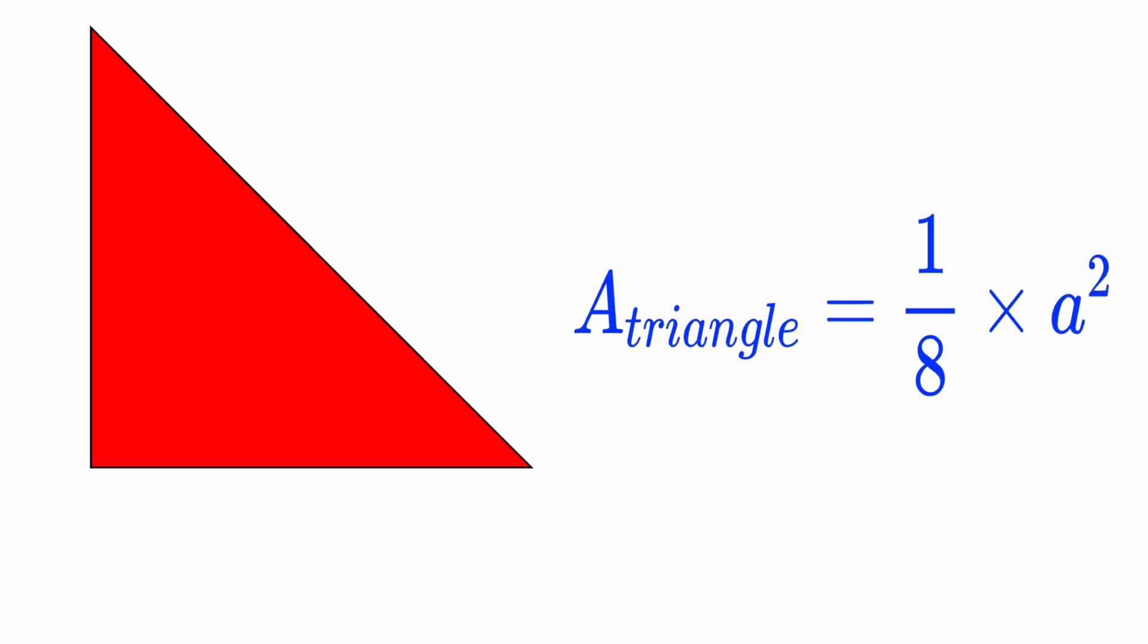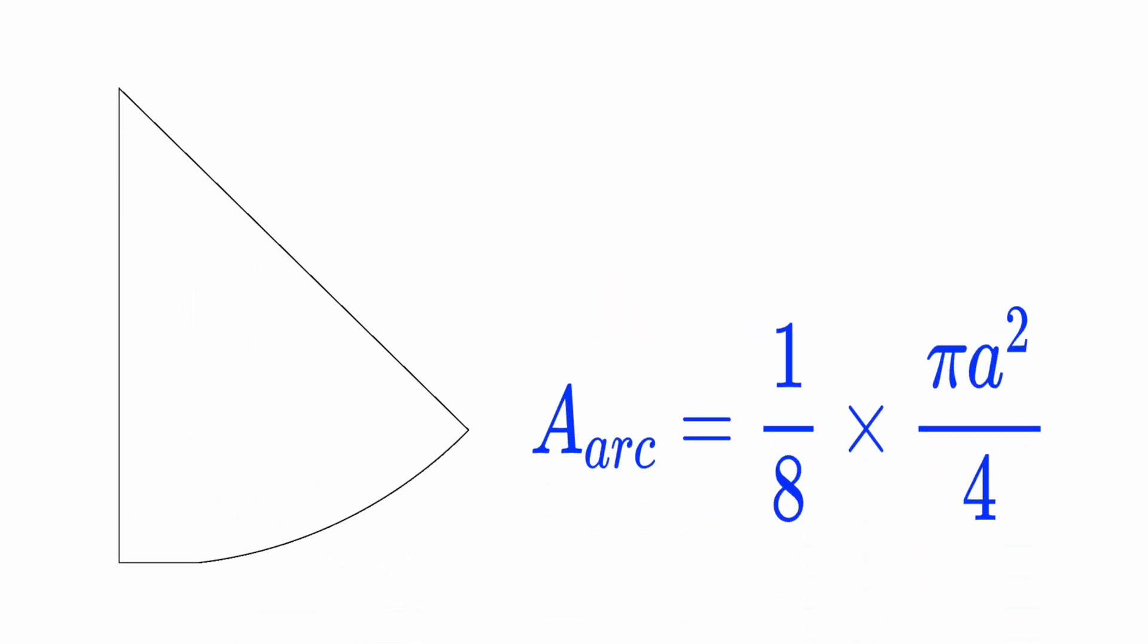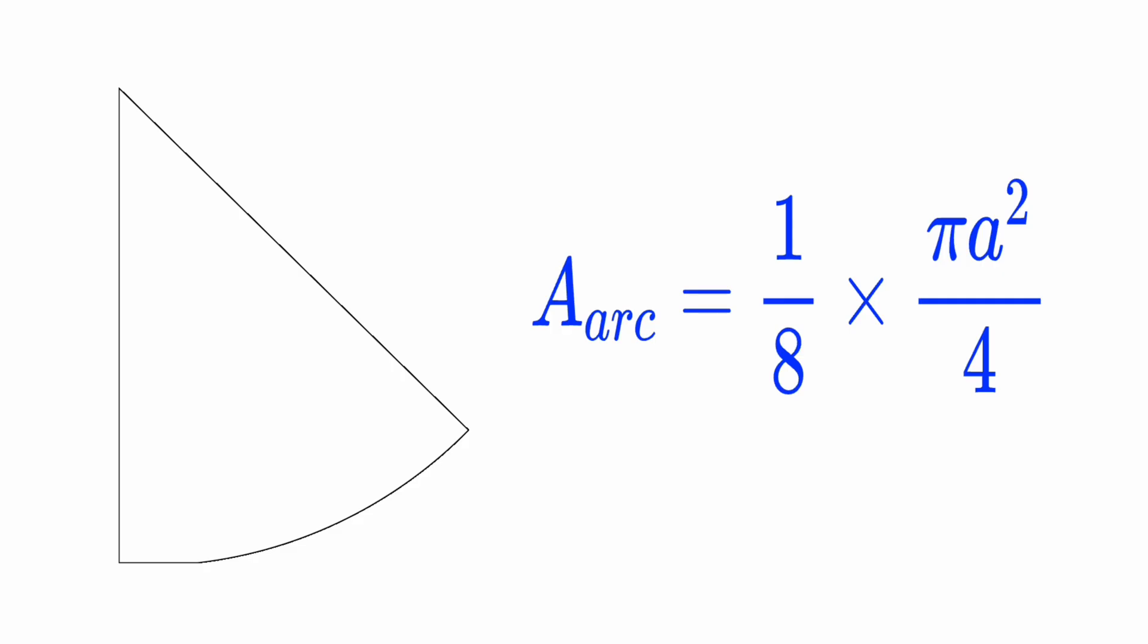Let's handle the triangle first. This triangle makes up one eighth of the full square. So if the area of the full square is side squared, that's a squared, then the triangle's area is one eighth times a squared.